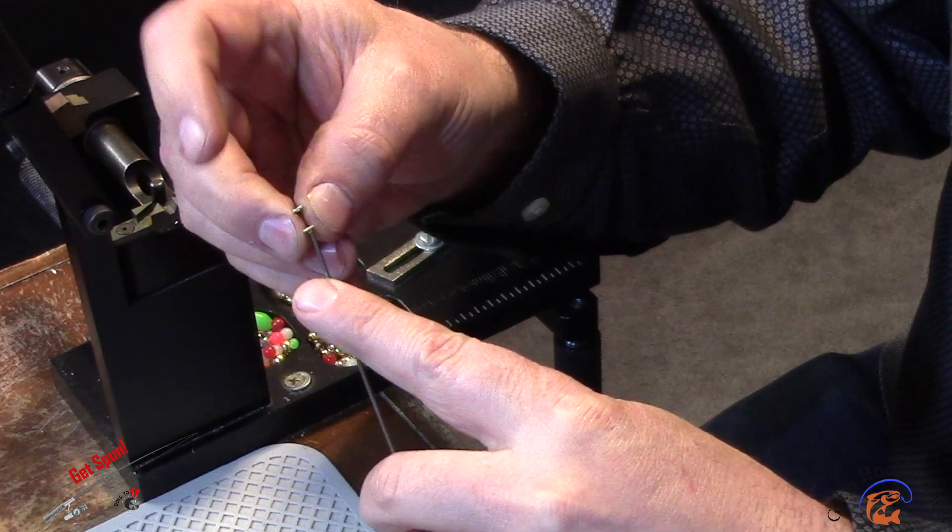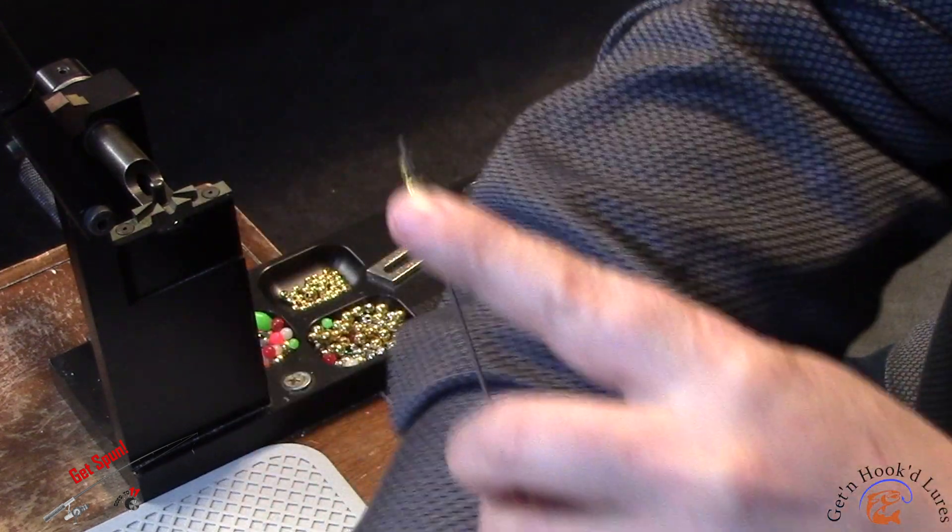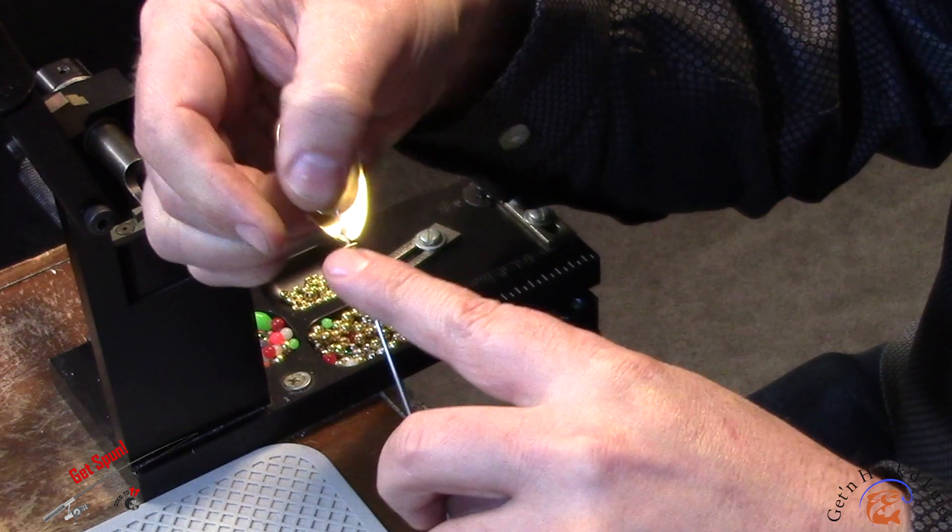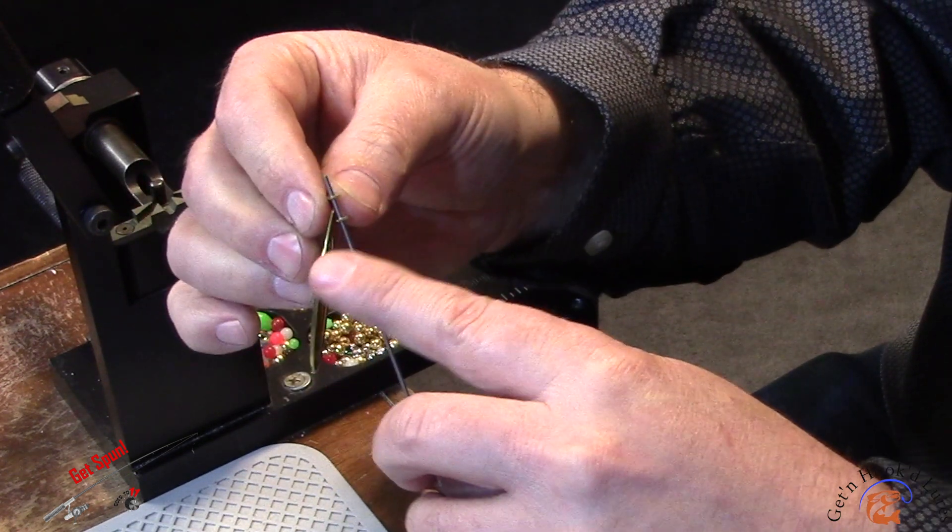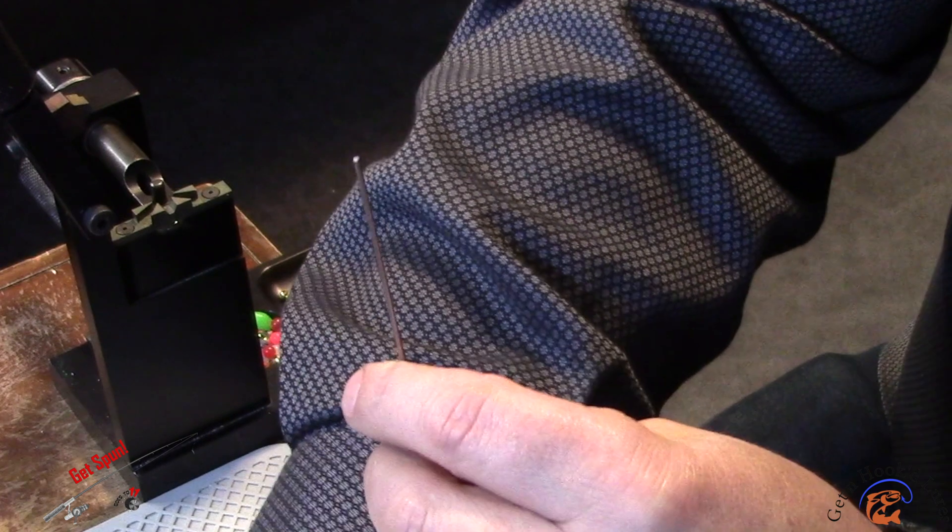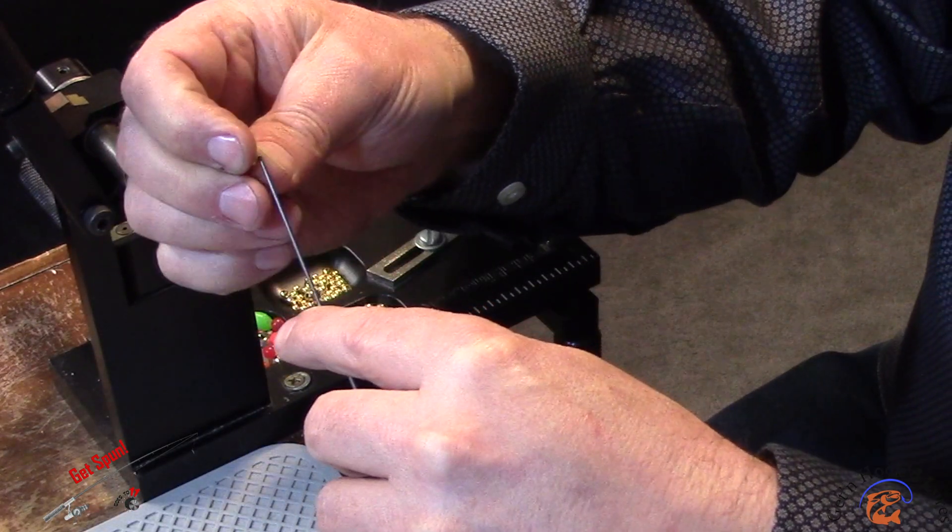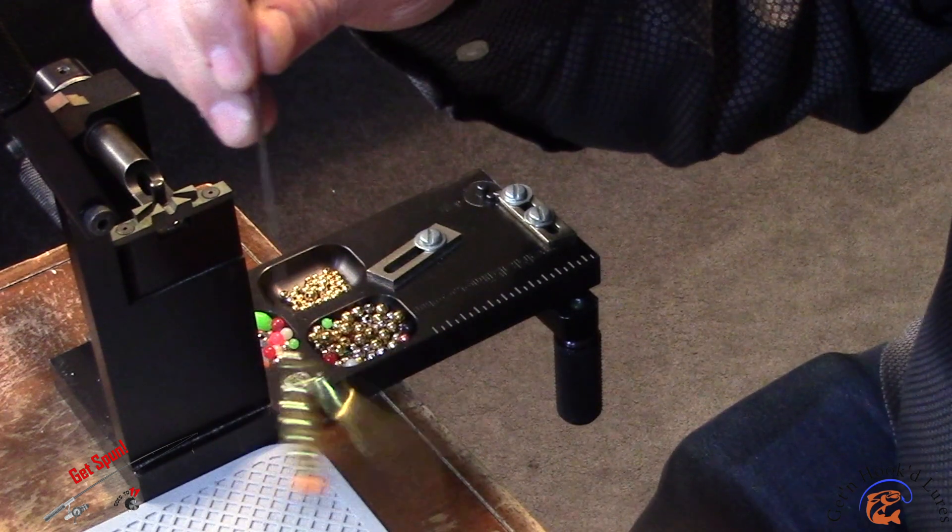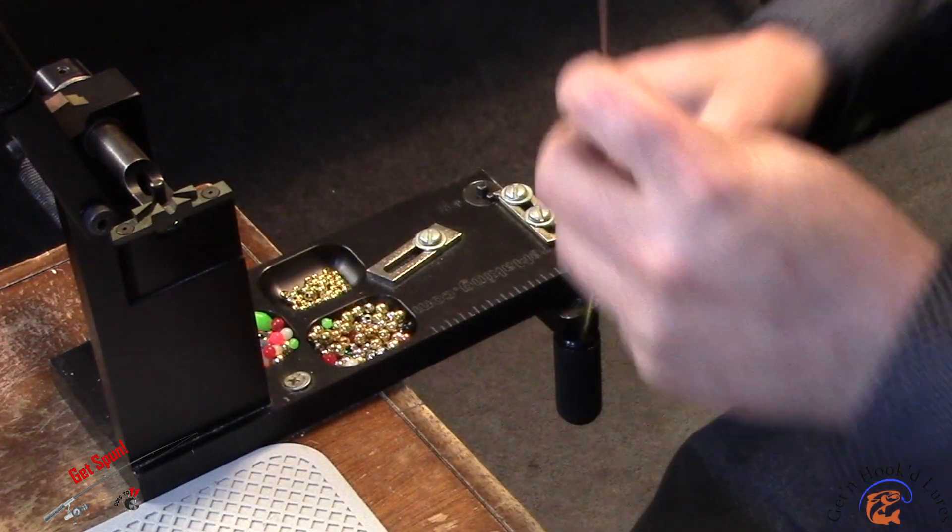Sorry, I guess you're not seeing that very well there with my hands. And then my clevis is going to go on there and a size 6 French blade on that. Another 3/16 brass bead on top of that. Make sure everything spins freely.